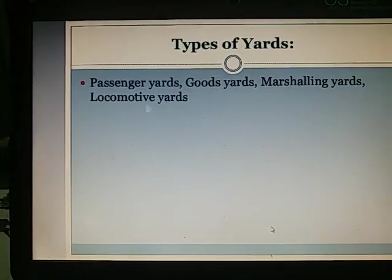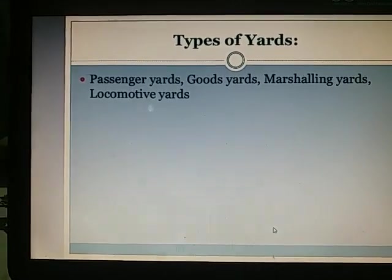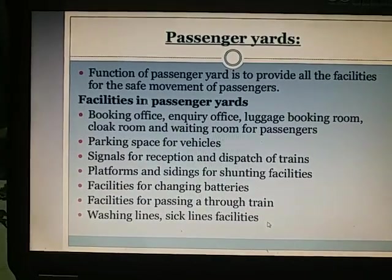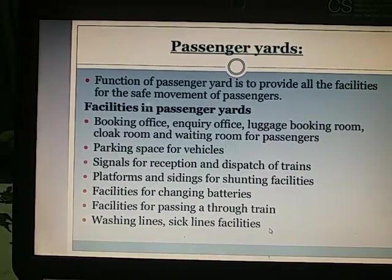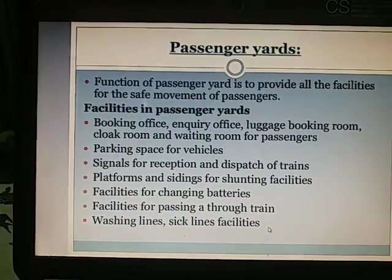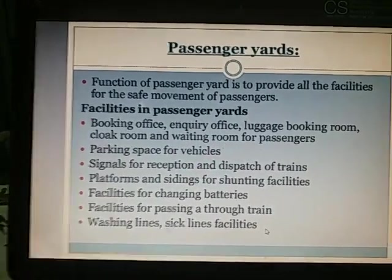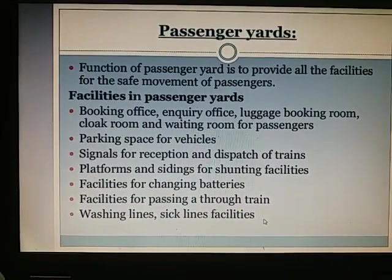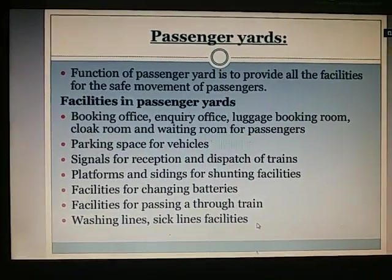Different types of yards include passenger yards, goods yards, marshalling yards, and locomotive yards. Function of passenger yards is to provide all the facilities for the safe movement of passengers. These include booking offices, inquiry office, luggage booking rooms, clock room, and waiting room for passengers, as well as parking space and signals for reception and dispatch of trains.